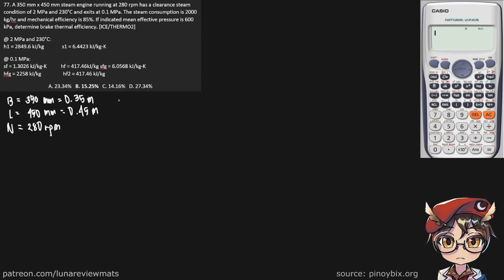So our steam consumption would be 2,000 kilograms per hour, and dividing that by 3,600, this becomes 0.5556 kilograms per second. And here we are also given our mechanical efficiency of 0.85.